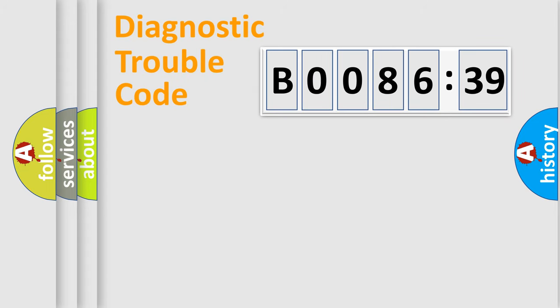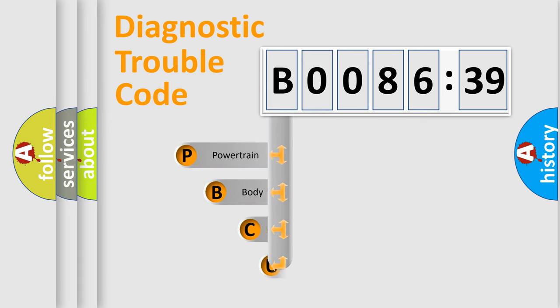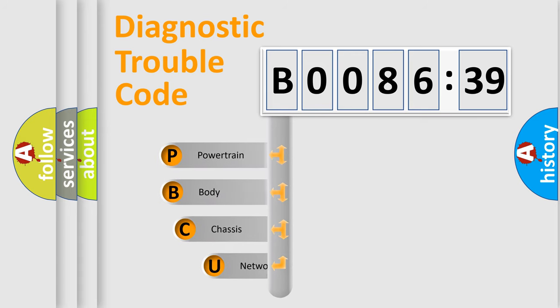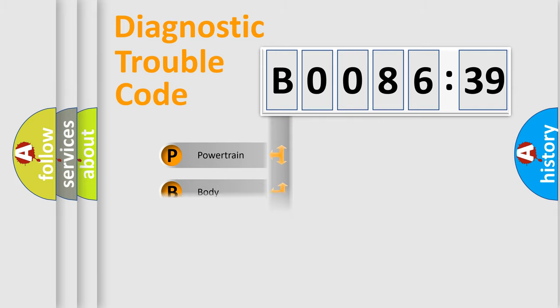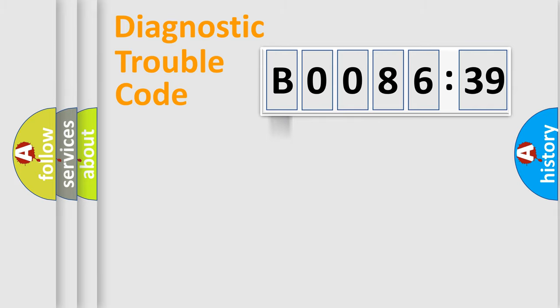First, let's look at the history of diagnostic fault code composition according to the OBD2 protocol, which is unified for all automakers since 2000. We divide the electric system of automobile into four basic units: powertrain, body, chassis, and network.